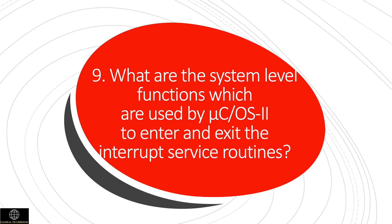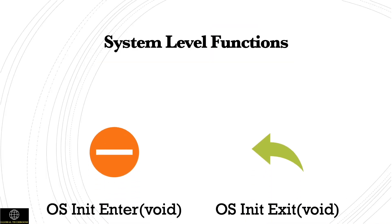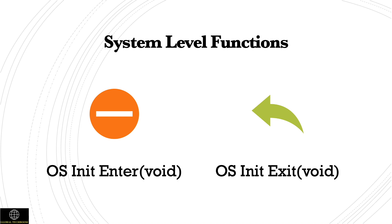What are the system-level functions used by MicroC/OS-2 to enter and exit interrupt service routines? OSIntEnter is used at the start of an ISR; it sends a message to the kernel for taking control. OSIntExit is used just before the return from an ISR; it sends a message to the kernel for putting control back to the presently running ISR.